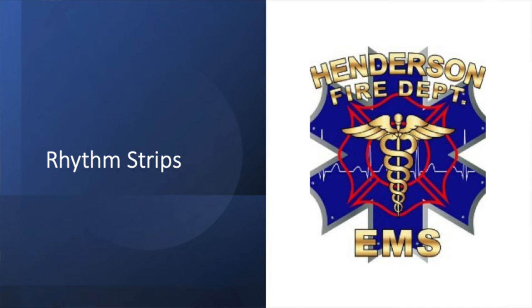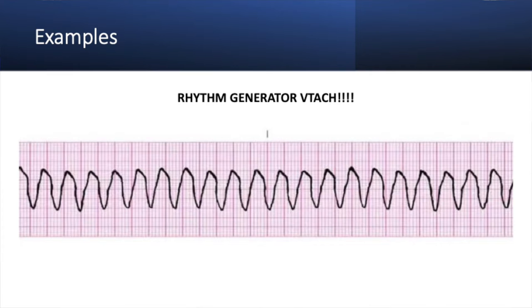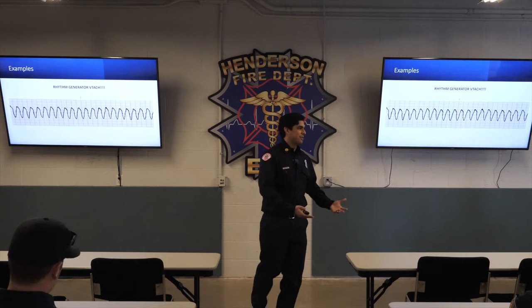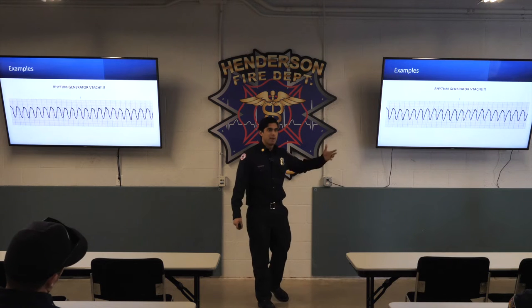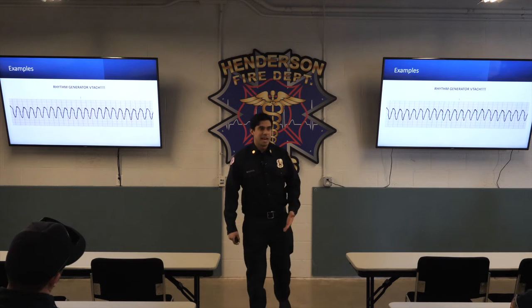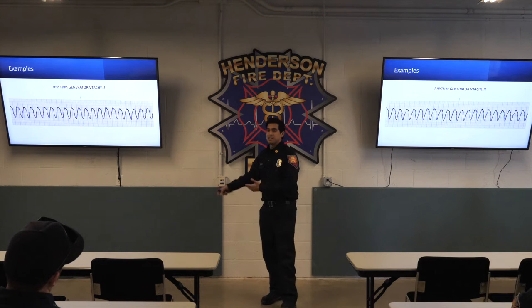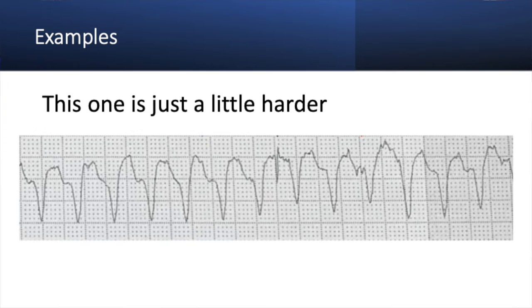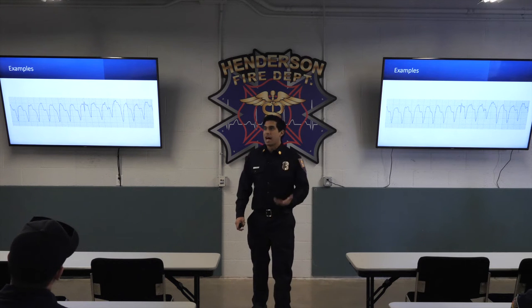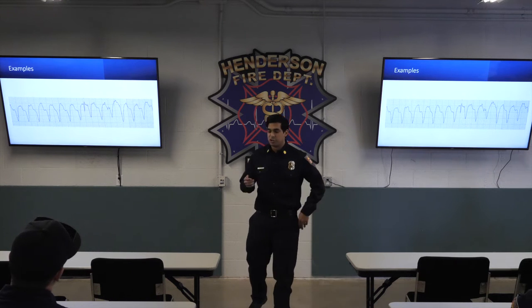Some rhythm strips to spark this discussion. This is VTAC — rhythm-generator VTAC. This is your most common version. You'll show up to a cool, pale, diaphoretic patient with this on the monitor and it'll be a relatively straightforward day. You'll know whether you lead with amiodarone or synchronized cardioversion. But the whole point of this class is this version — the one that's not as obvious. Is it really wide? Is it discordant or concordant? This is the one that's not as pleasing to the eye, and the plan isn't immediately clear.